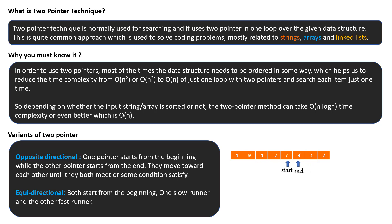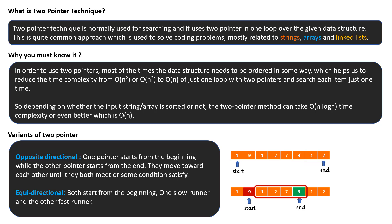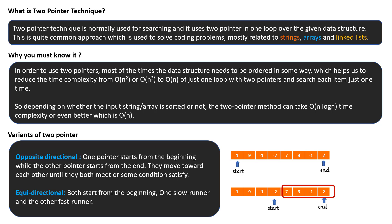In equidirectional, both pointers start from the beginning. One will be a slow pointer and the other will be a fast pointer. You can take an example like sliding window — the last time we already discussed sliding window technique, but unknowingly you were using the two pointer technique there. There are two pointers: one at start and one at end, and when the window slides, both pointers move from left to right in the same direction — equidirectional.